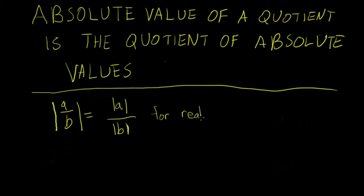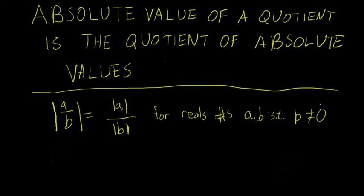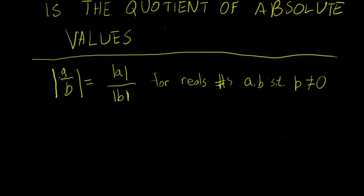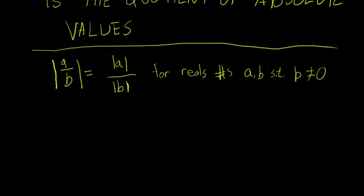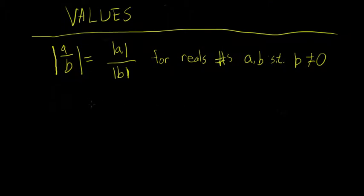For real numbers A and B such that B is not equal to 0 — so obviously we can't divide by 0. The way we're going to go about proving this is we're going to examine four cases: both A and B are positive; A is positive, B is negative; A is negative, B is positive; and both A and B are negative. Just like we did in the case of proving that the absolute value of a product equals the product of the absolute values.